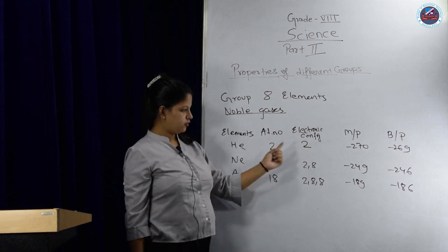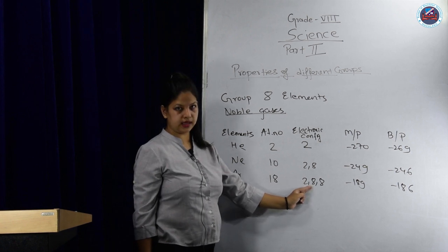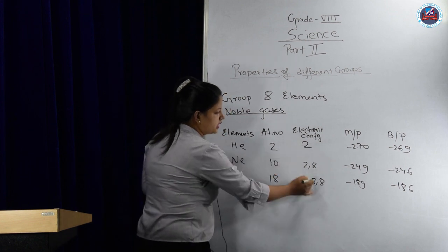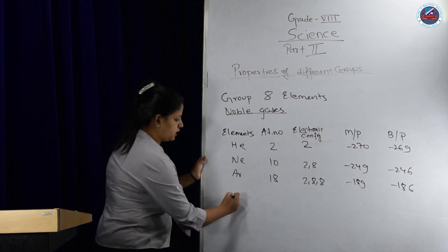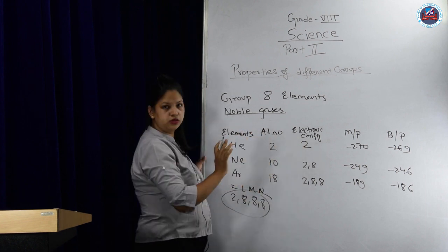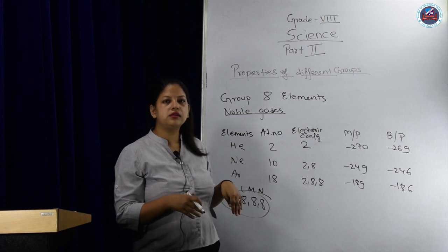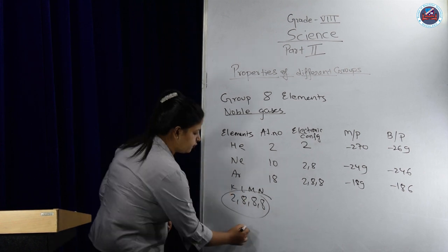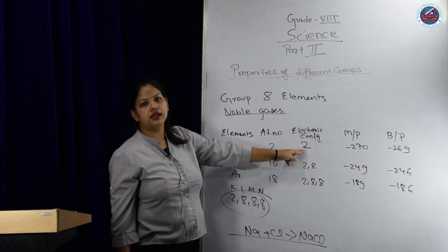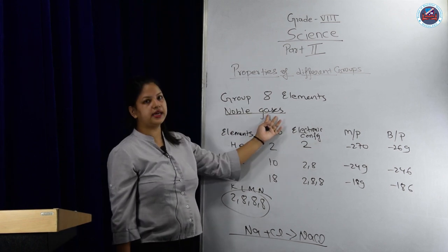Electronic configuration: for helium it will be only 2 electrons. For neon, 10 total - first 2 in K, 8 left in L. For argon 18, it's 2 in K, 8 in L, and 8 in M. They follow the satisfaction rule of octet: 2, 8, 8 rule. They are very much satisfied, so they do not react with other elements.